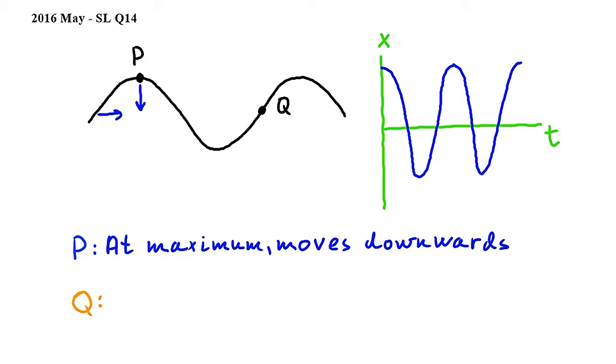In other words it is at its equilibrium position, and we also see that a lower lying region of the wave is going to move through Q, which means that Q will also move downwards.